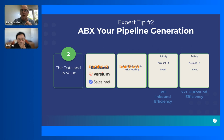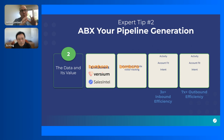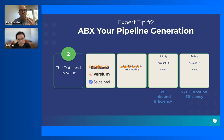In our case we use Bombora intent data, and we also tend to use an identity graph — the example here is Versium — which can take contact data and leverage an identity graph to allow B2B providers to use B2C data to expand their ability to reach a particular target. When you do this well and feed this knowledge to your outbound team — your BDRs or AEs directly — you can get a radical improvement in inbound efficiency and outbound efficiency, getting to that all-bound motion.